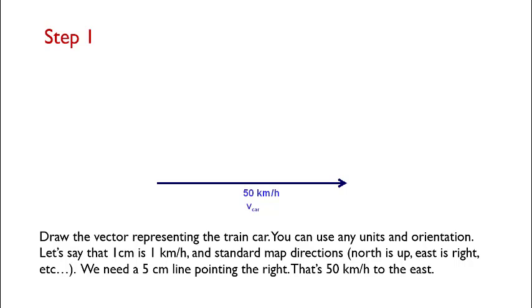If we do this, we'll need a five centimeter line to indicate the motion of the car, and we'll need to point it to the right. That's going to be our 50 kilometers per hour to the east.